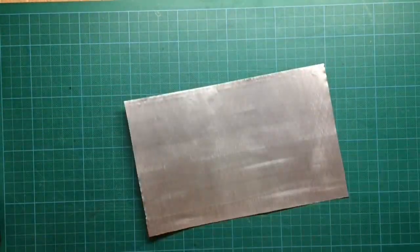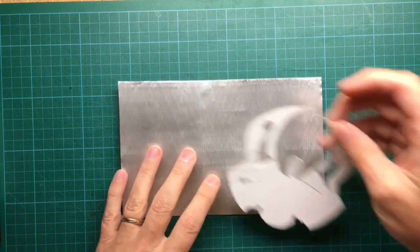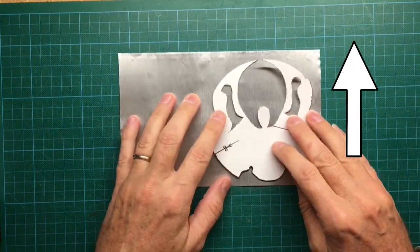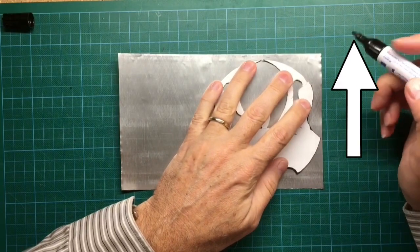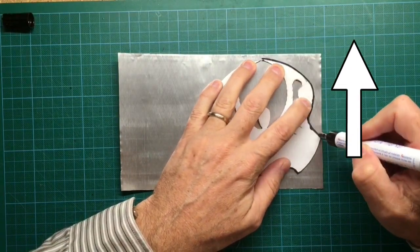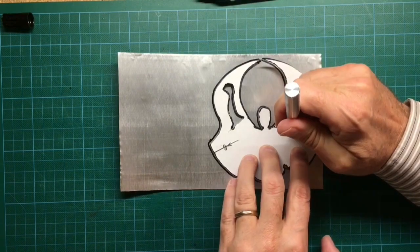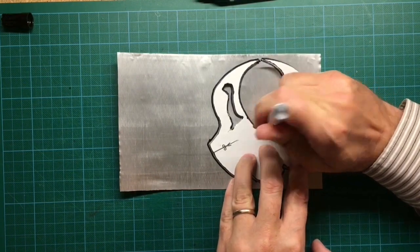I already posted a video on how to produce flat aluminum sheets from soda cans. Just follow the link in the upper right corner. Now transfer the design of your cardboard angel to the aluminum sheets with the use of a marker.